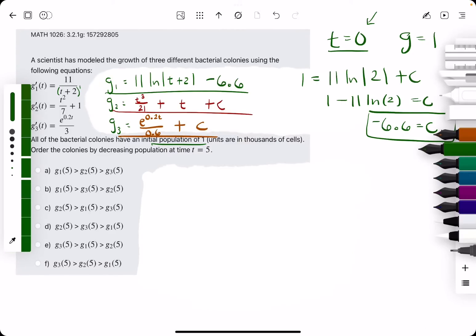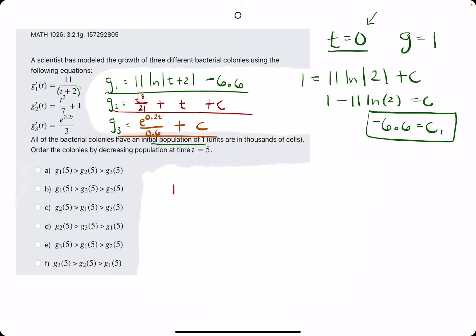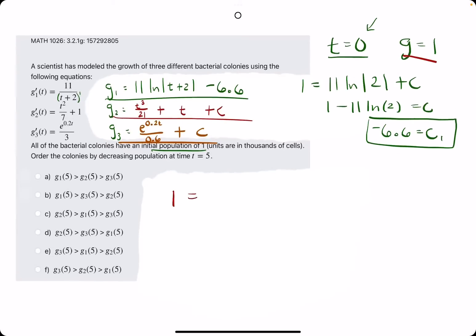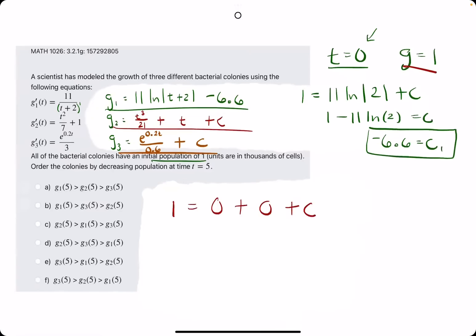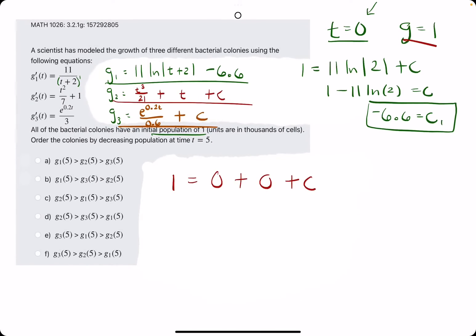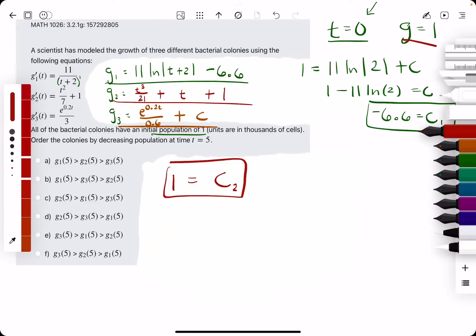We'll move on to g2. Again, we're inputting 1 for g and 0 for t. When we do that to these two t terms, everything zeroes out except for c, because 0 cubed over 21 plus 0 is just 0 across the board here except for the c value. So we have that c is equal to 1, and this was our second c, c2.